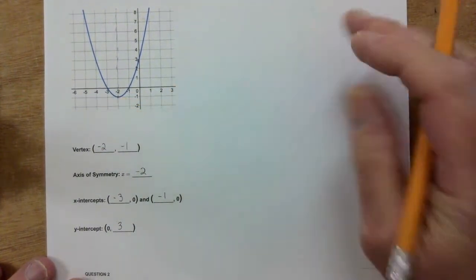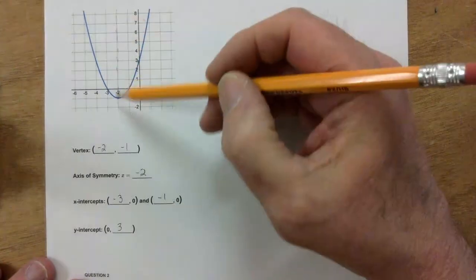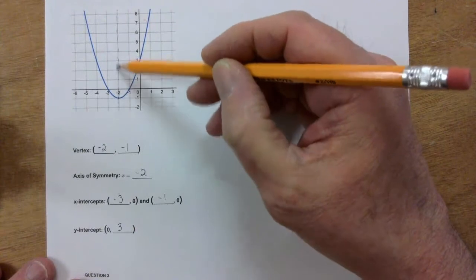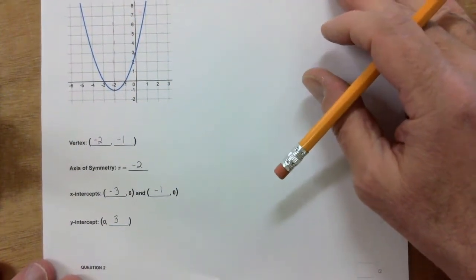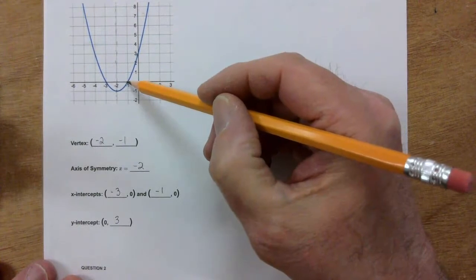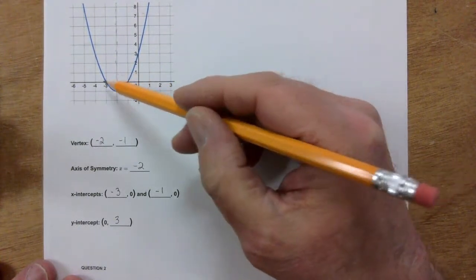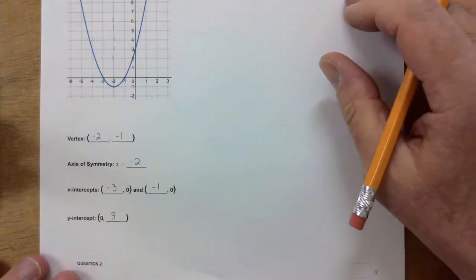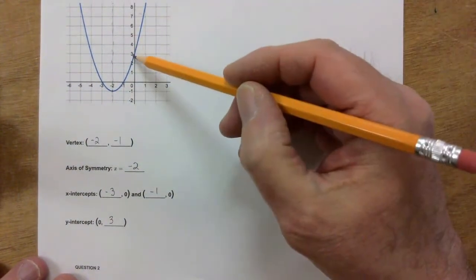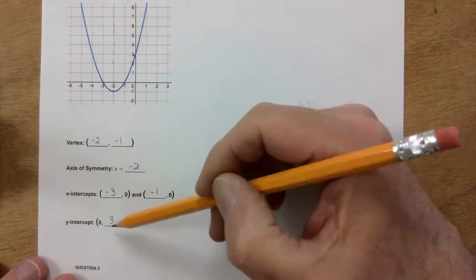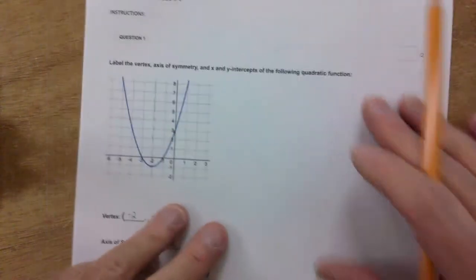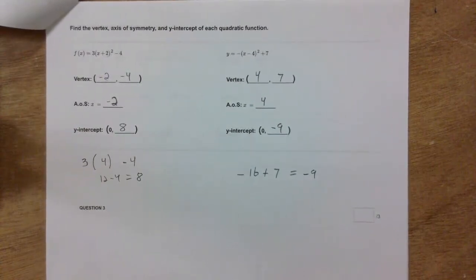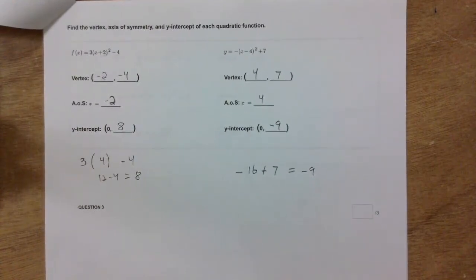The axis of symmetry goes right through the vertex up and down — x always equals negative 2. The x-intercepts are where it crosses the x-axis: take a look, it crosses at negative 3 and negative 1. And the y-intercept, where it crosses the y-axis, is 3.